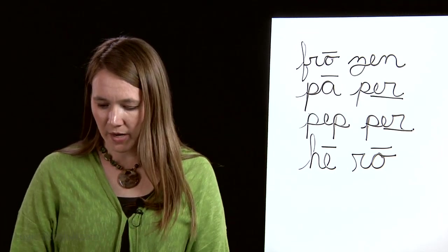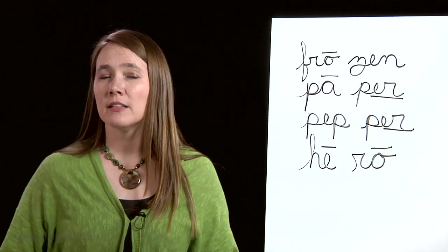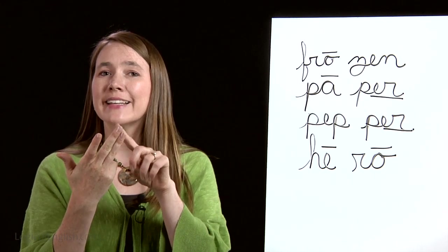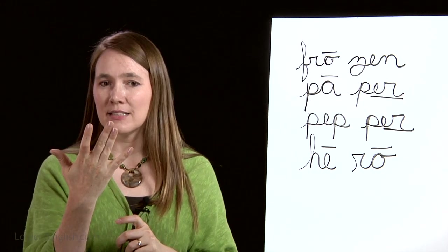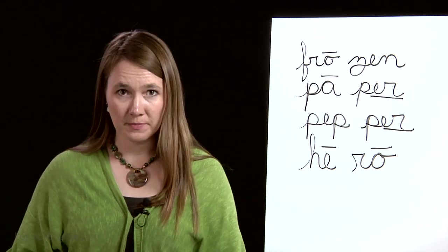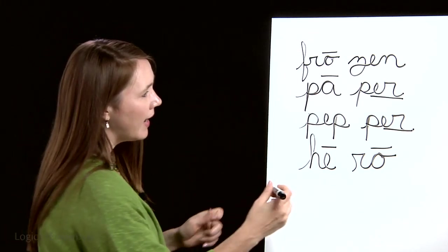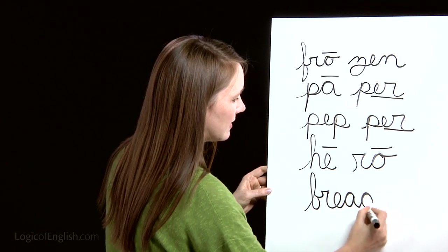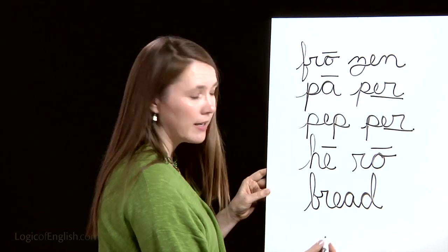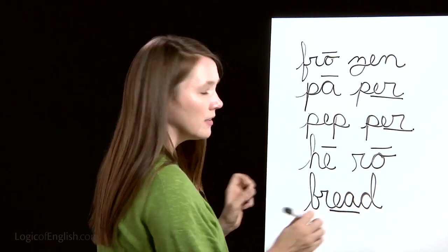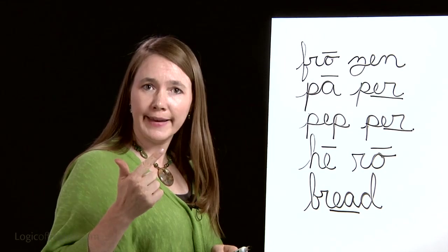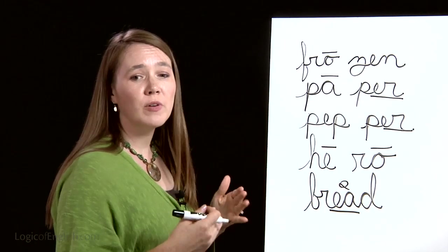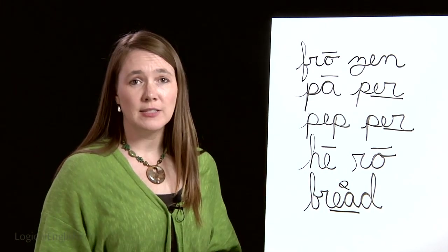The next word is 'bread.' We will have bread for lunch. Let's sound it out together: B, R, E-A, D. This is an E-A. Go ahead and write it. B, R, E-A, D. And how will we mark it? We'll underline the E-A. What sound of E-A is it? It's the second sound, so we're going to put a little two over it to remind us it's saying its second sound, 'e.'